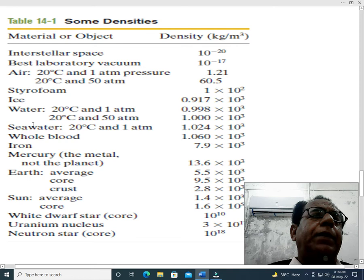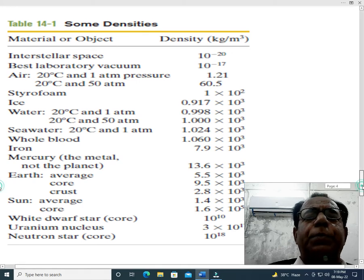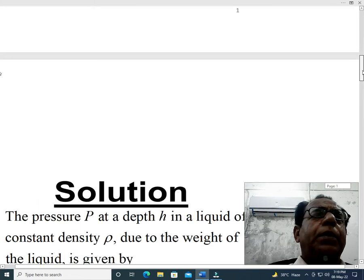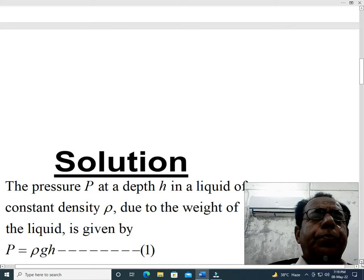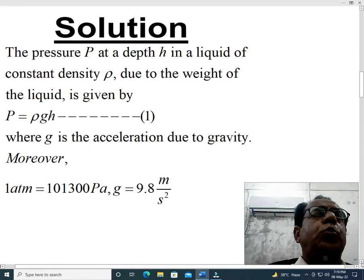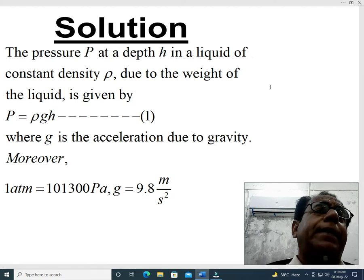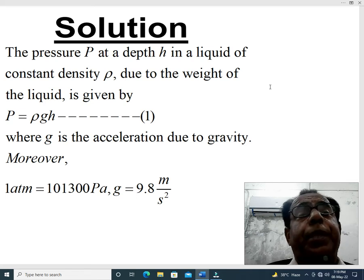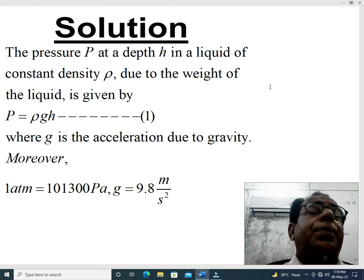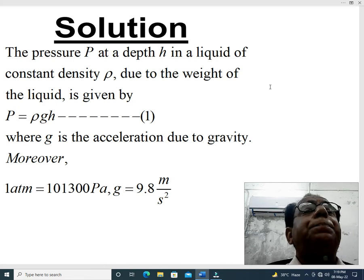If we eliminate this factor 10 raised to the power 3, then it will become 1024 kilogram per meter cube. Line number 8 of this table. Now, we move on to our solution. So dear students, now we come towards the solution. We start our solution in the same pattern in which we have solved our several previous problems. First, we define pressure in mathematical form. The pressure P at a depth H.